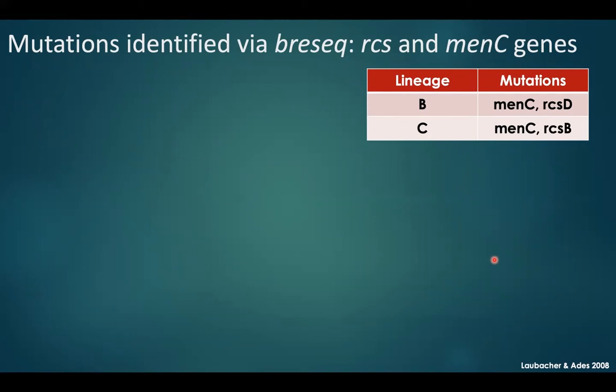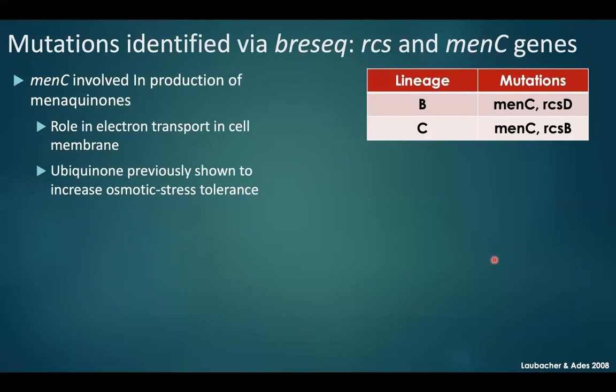Upon Breseq analysis comparing the ancestral and evolved lineages, two mutations shared amongst evolved strains B and C were in the MenC gene, which is involved in the production of menaquinones. These have a role in electron transport in the cell membrane, and ubiquinone has previously been shown to increase osmotic stress tolerance in certain bacteria. Further literature review is needed, but from first glance there's prior research suggesting this MenC mutation would confer increased osmotic tolerance.